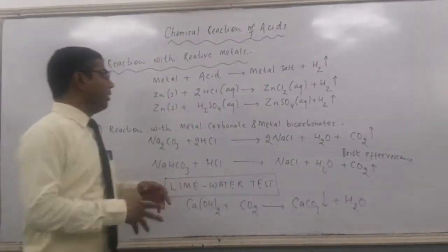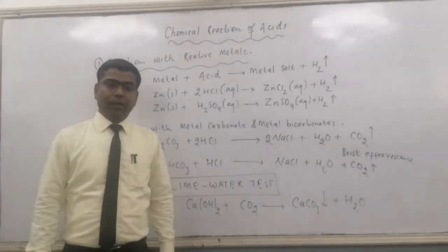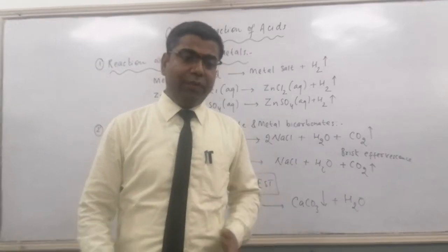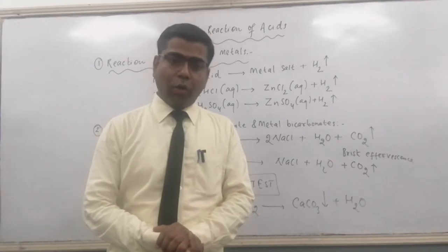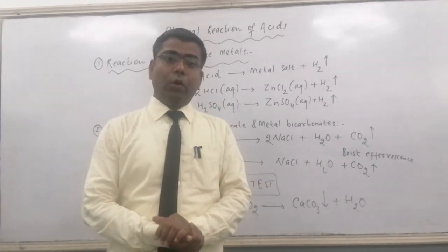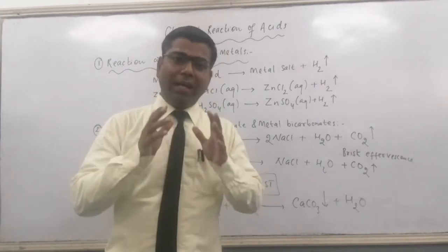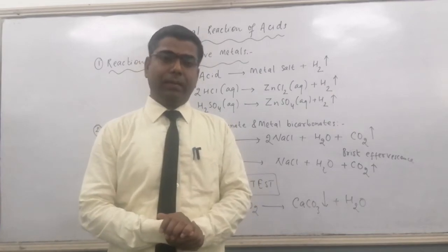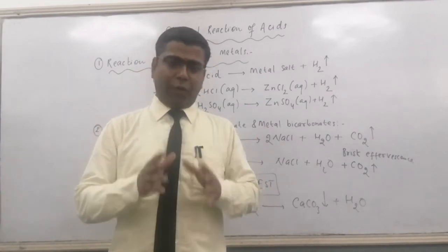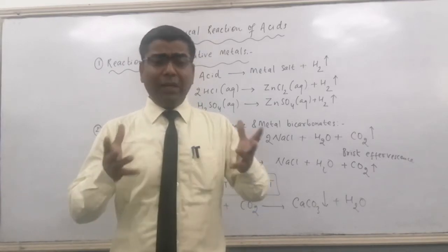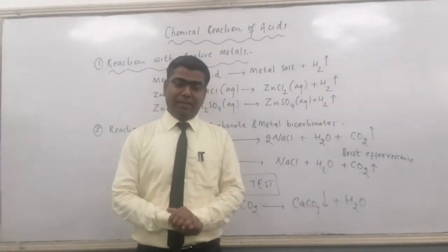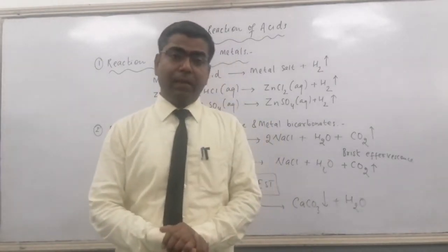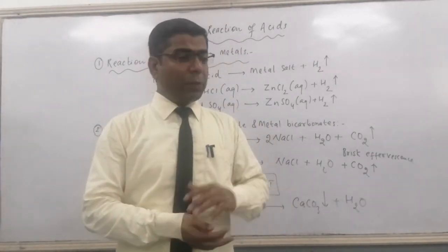Let us start with the first chemical reaction — Reaction of Acids with Reactive Metals. Those metals which are more electropositive than hydrogen are called Reactive Metals. All the metals which have more electron-losing tendency compared with hydrogen are called Reactive Metals. When such metals react with acids, a displacement reaction will take place. A more reactive element will displace a less reactive element.